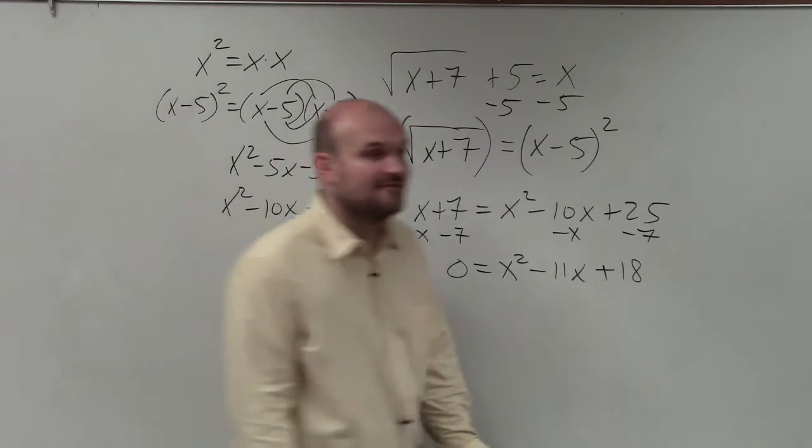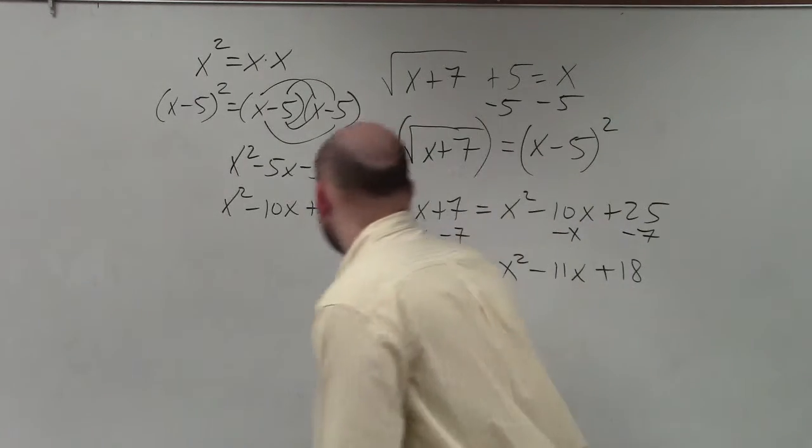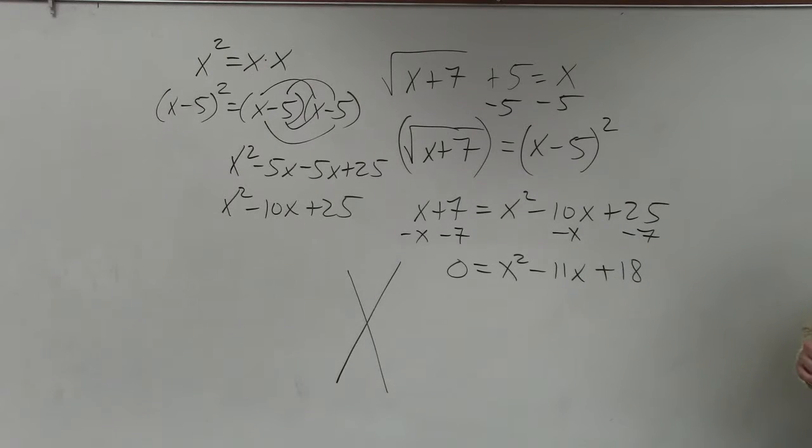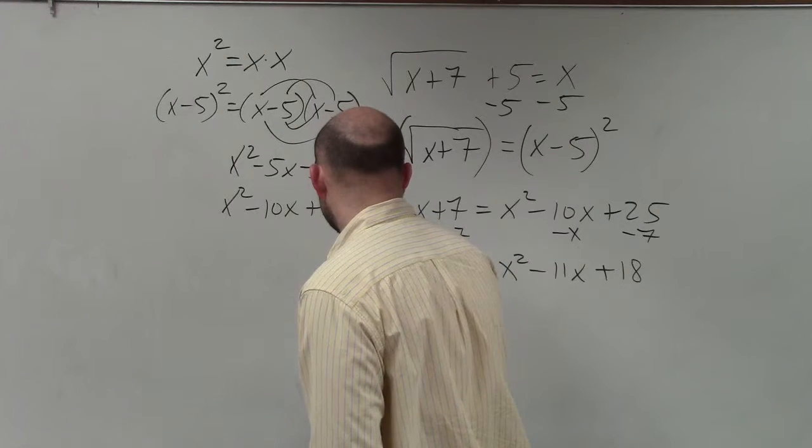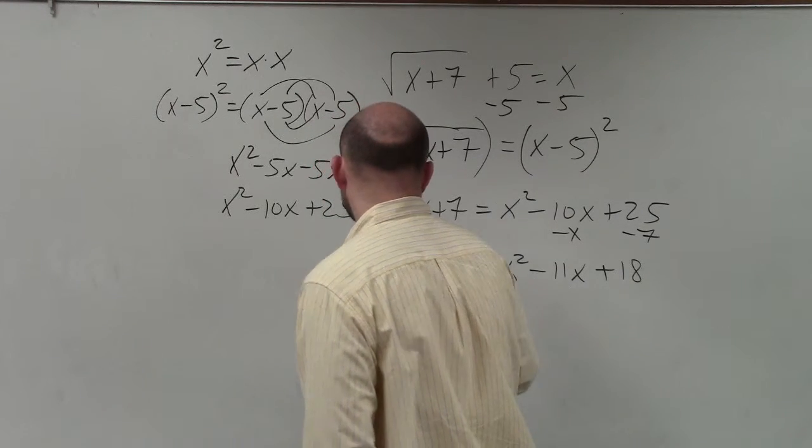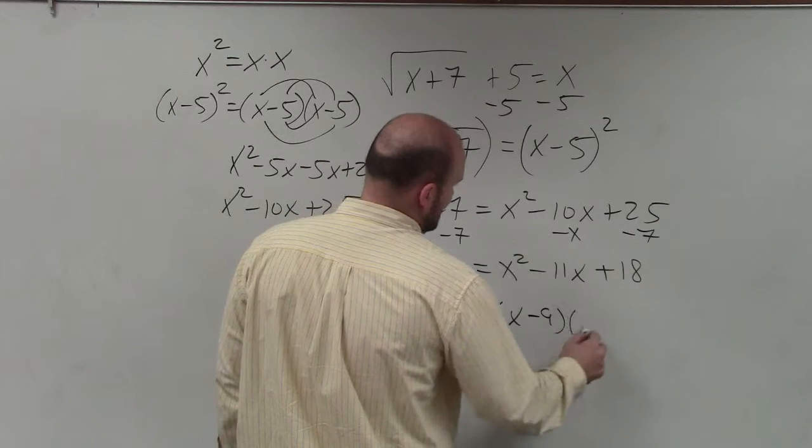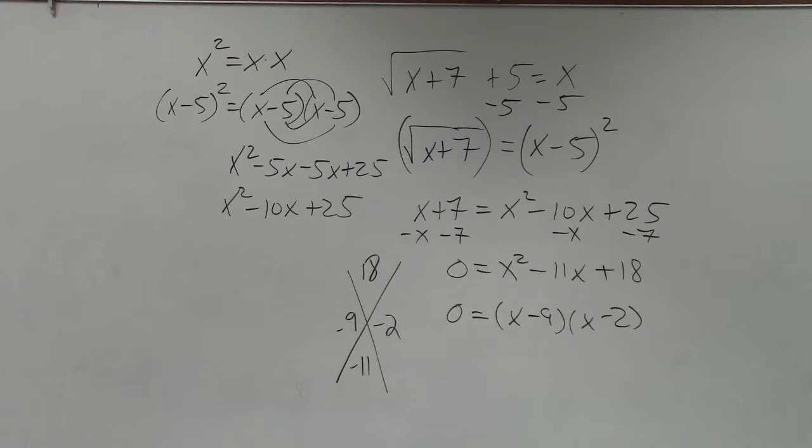So now, to learn how to factor this, or to solve this, we want to see if this is factorable. So I go and say, what two numbers multiply to give me positive 18 and then add to give me negative 11? Negative 9 and negative 2. 0 equals x minus 9 times x minus 2. So remember, you take those factors and you multiply them through.